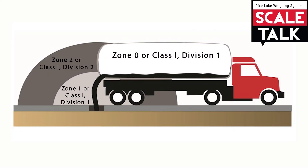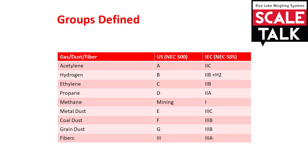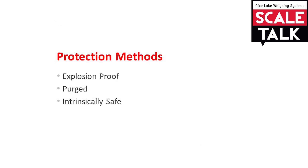On top of zones, divisions, and classes, we also have groups for gases, dusts, and fibers. These groups help define what protection method can be used: explosion proof, purged, or intrinsically safe. We'll get into further detail on these protection methods in our next episode of Scale Talk.